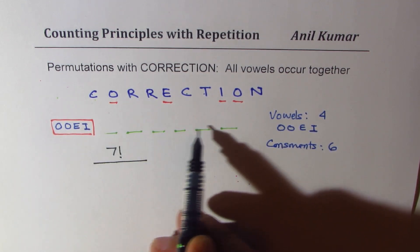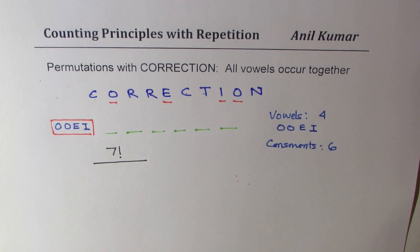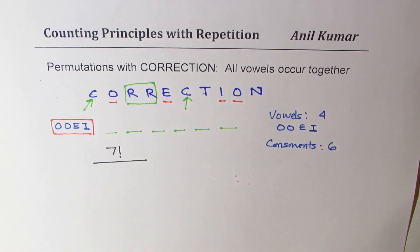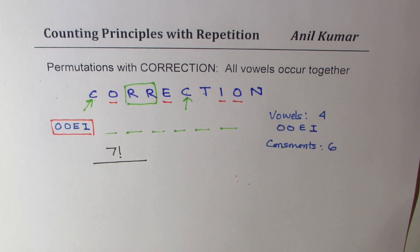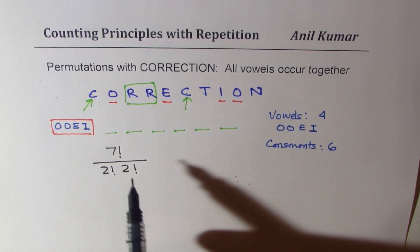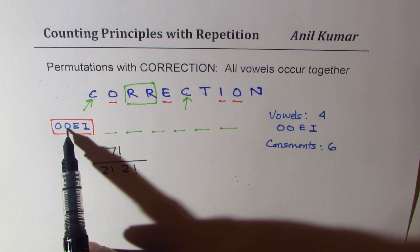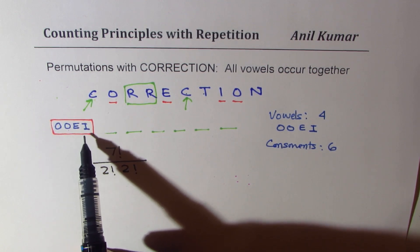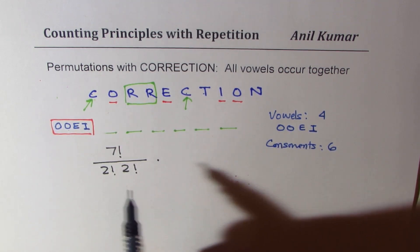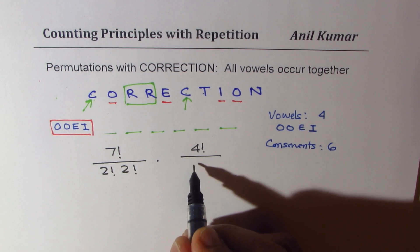We divide by the repeated consonants: two R's repeat and two C's repeat, so we divide by 2 factorial twice. For each of these arrangements, the four vowels O, O, E, I inside the group can also be arranged separately. Since there are 4 vowels, that's 4 factorial divided by 2 factorial because the two O's repeat.